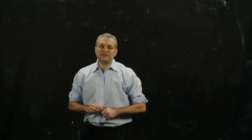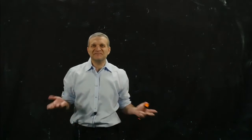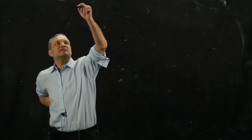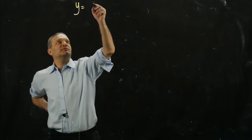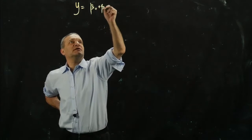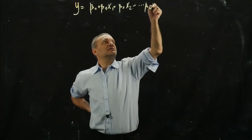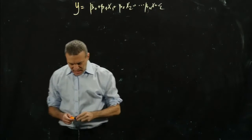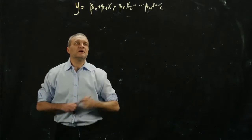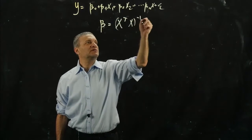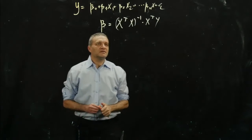All right guys, hi again. So last video, we looked at the regression coefficients, and we said that y is going to be presented as beta 0 plus beta 1 x1 plus beta 2 x2 plus ... plus beta n xn plus epsilon. And we said that in this case our betas are actually (X transpose X) inverse times X transpose y.